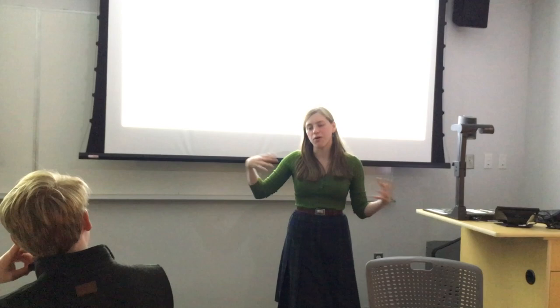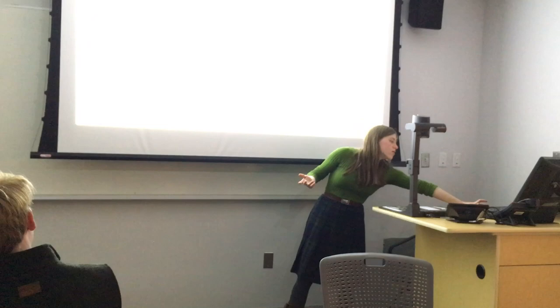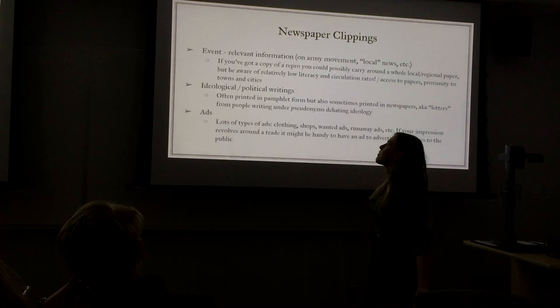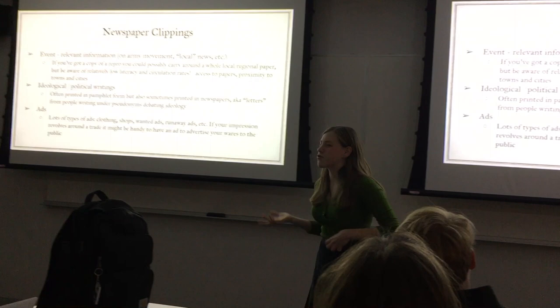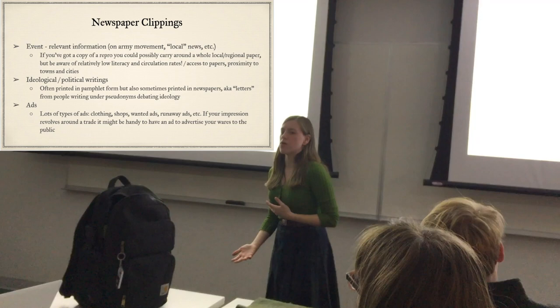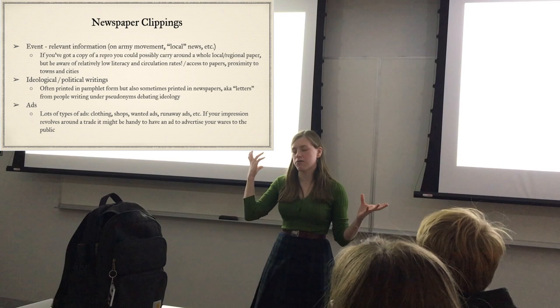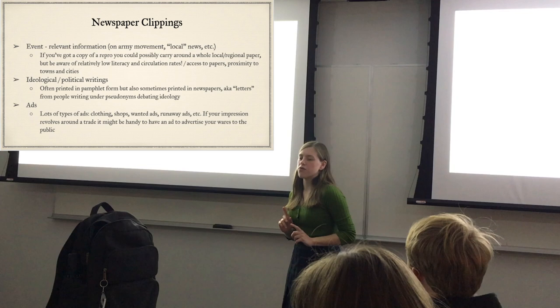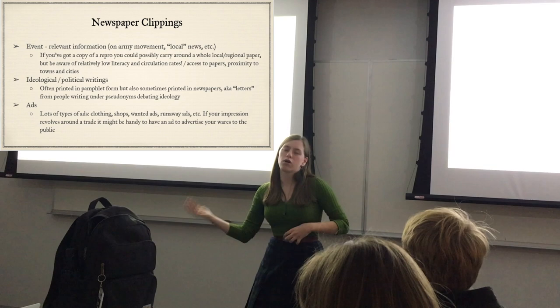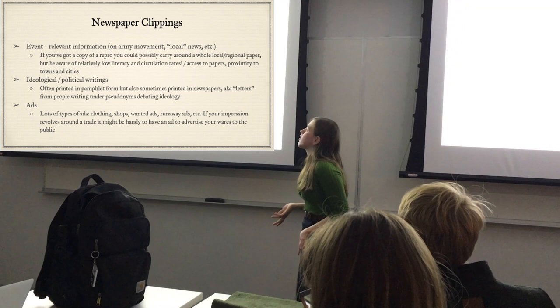There are general categories: items you might carry in the 18th century, and then items that provide backstory but that you might not necessarily carry, like clippings or an advertisement. Our first item of interest is newspaper clippings, which can range from having relevant information to the event you're going to - say somebody wrote an article on a battle - or if you're interpreting a specific event, like Dunmore coming out onto the portico of the Governor's Palace and talking about giving freedom to enslaved people who came and joined the British Army, that would be a relevant clipping you could carry.